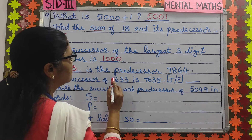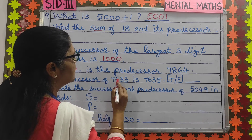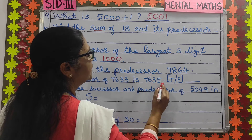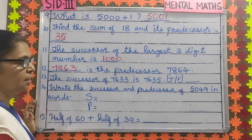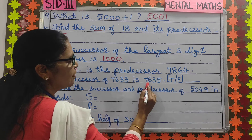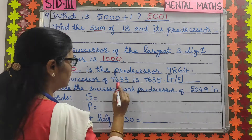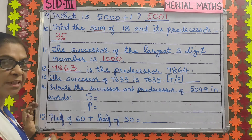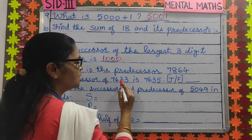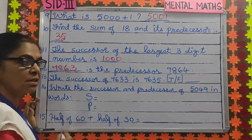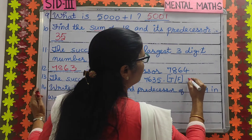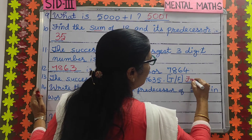Number 13: the successor of 7,633 is 7,635 — true or false? Is 7,635 the successor of 7,633? No. The successor of 7,633 is 7,634. So it's not true — it's false.